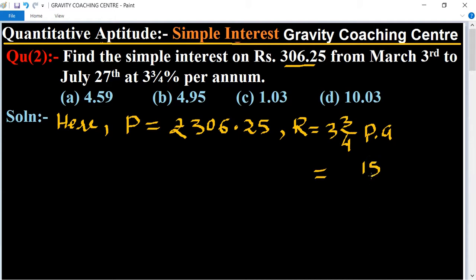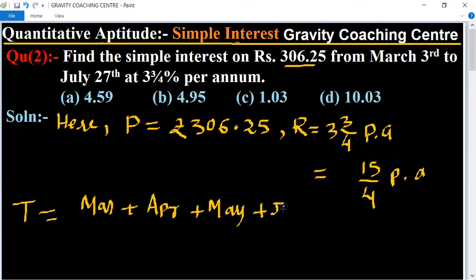This equals 15 upon 4 per annum. Time T equals from March to July: March plus April plus May plus June plus July.